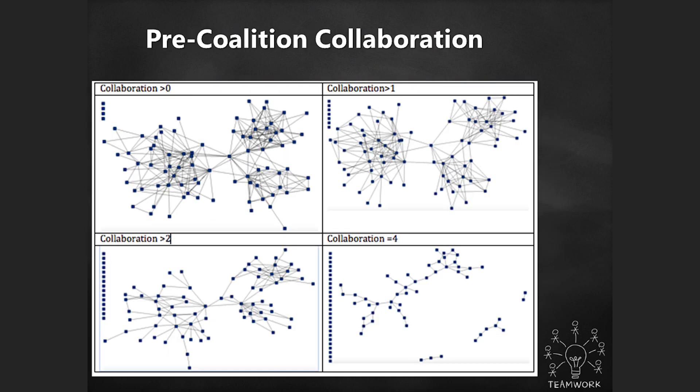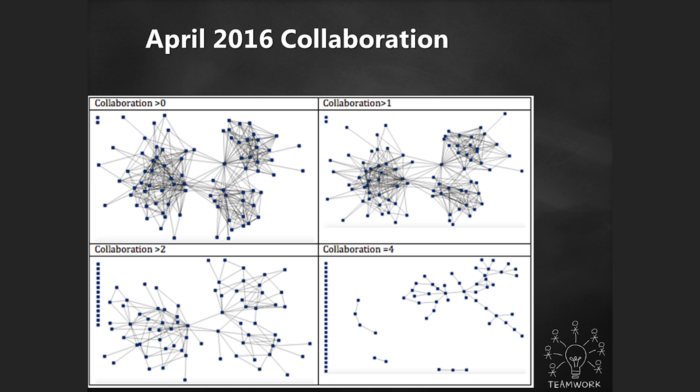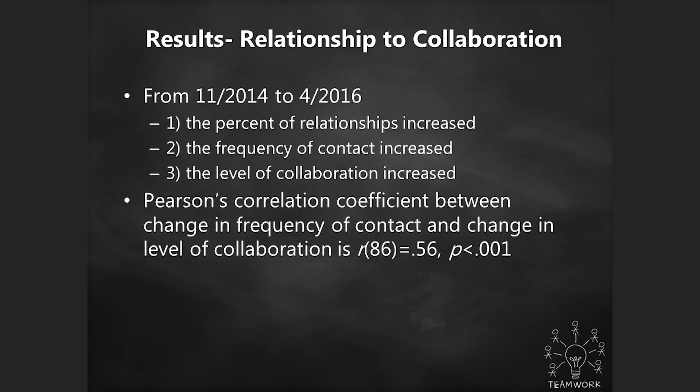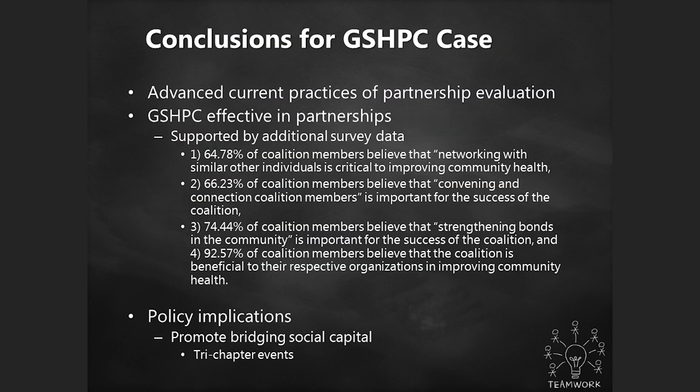There were three chapters of one coalition meeting, and you can visually see that — this chapter is larger and they know each other, this chapter they know each other, this chapter they know each other, and there are a few people bridging those three chapters. From a social capital standpoint, you'd really want to know who those bridging people are, because they're bringing information between the different coalition chapters. We found that we're increasing relationships and collaboration, people think these relationships are important and will lead to coalition success, but we also found that maybe we need to promote more bridging social capital — more connection between those coalitions — because really, for the most part, we have three separate networks there.